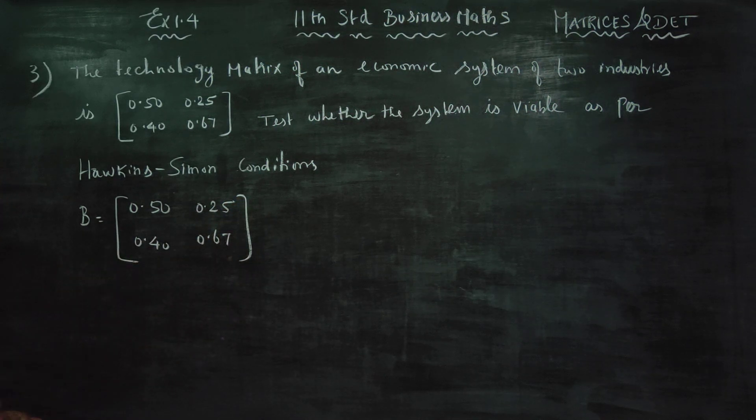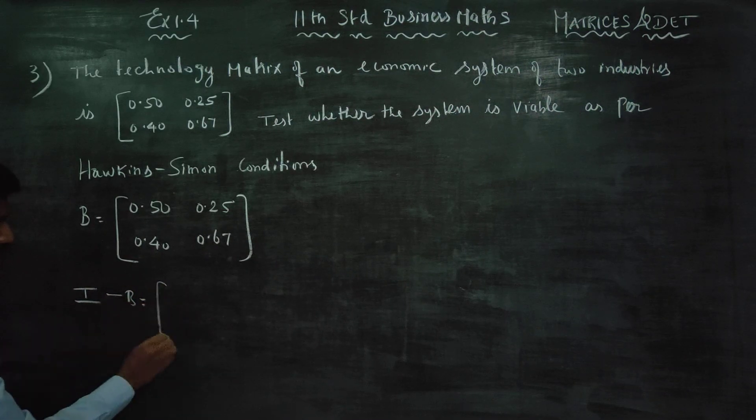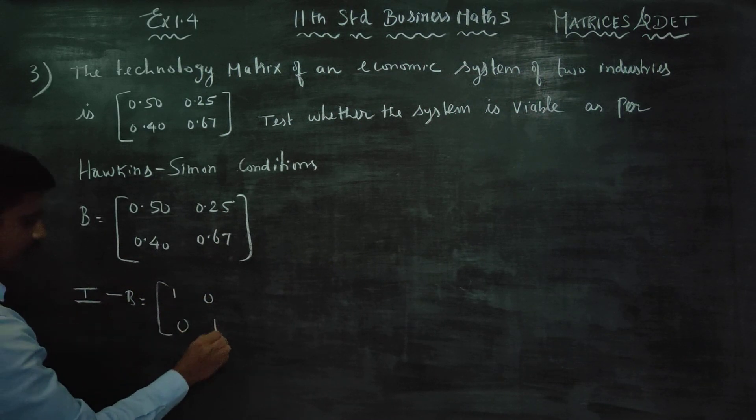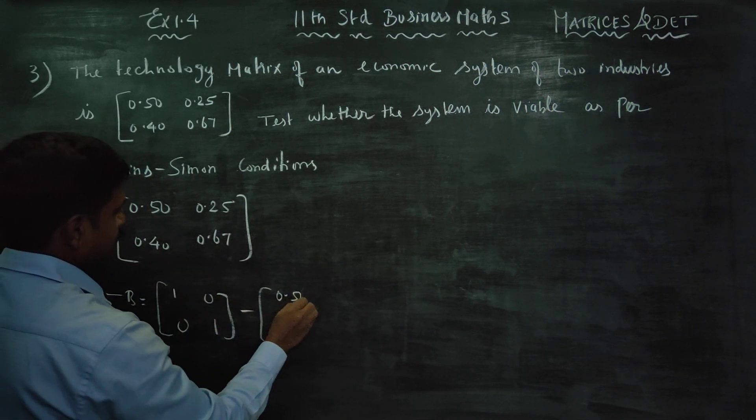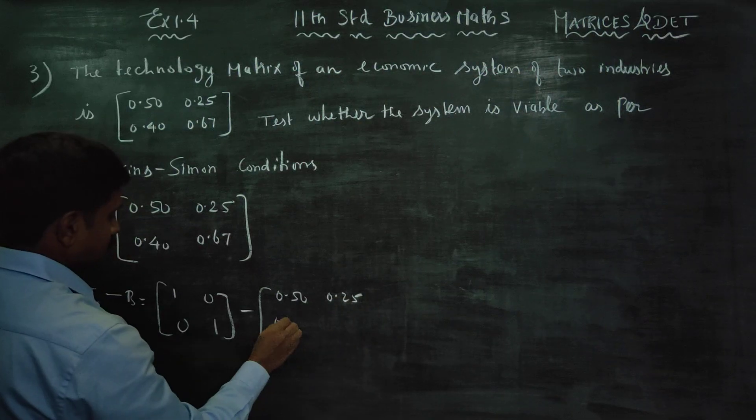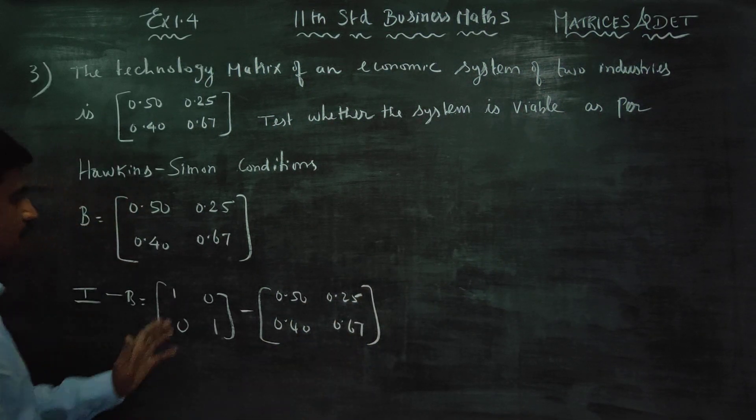Technology matrix is ready for Hawkins-Simon condition. First, I minus B. The unit matrix I is [1, 0; 0, 1] minus B which is [0.50, 0.25; 0.40, 0.67].